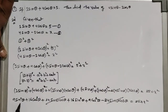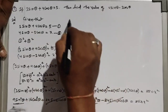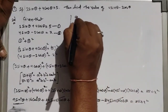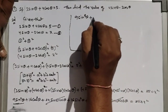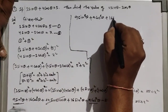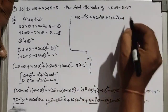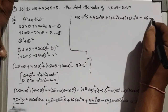Regrouping the terms: collect the 9sin²θ and 9cos²θ together, and the 16cos²θ and 16sin²θ together. This gives: 9(sin²θ + cos²θ) + 16(cos²θ + sin²θ) = 25 + x².